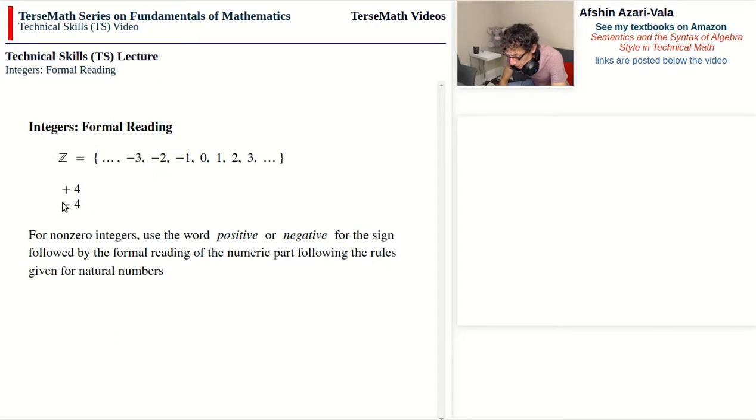So we read this number as positive 4 and this one as negative 4. Okay a few more examples. This number we read as 429 and you notice that 29 is hyphenated. Now if I put the positive sign next to it, then the reading of the number changes to positive 429.